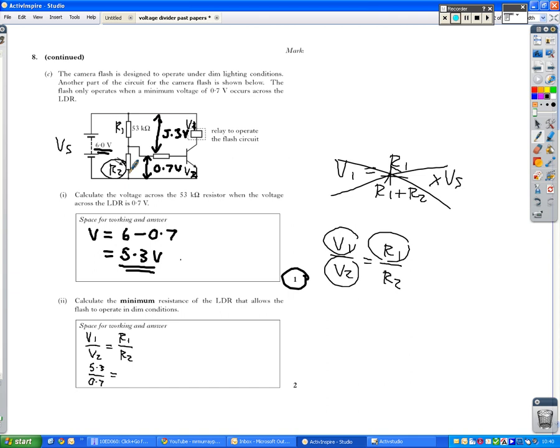You know, you could put it in kilohms as well, but I would convert that kilohms, this 53 kilohms, into ohms here just in case. So 53 kilohms is 53,000 ohms. Divided by R2.